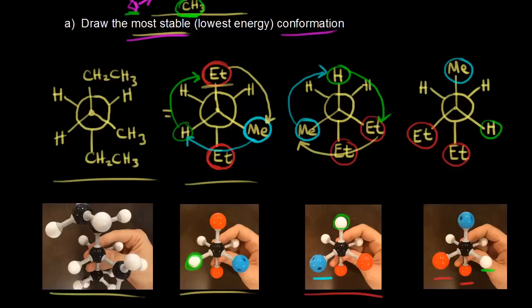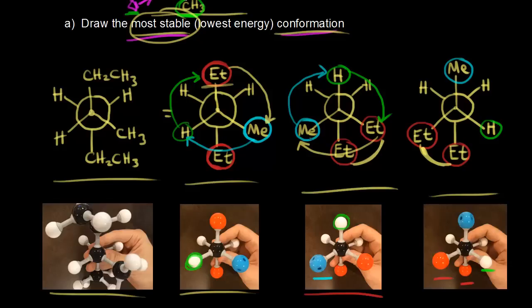Now we're able to choose the most stable conformation out of our three staggered ones. We need to think about the gauche interactions present. The conformation on the right has an ethyl-ethyl gauche interaction — ethyl groups are bulky, so this destabilizes that conformation. The next conformation has an ethyl-ethyl gauche interaction AND a methyl-ethyl gauche interaction — two gauche interactions, making it even more unstable. Finally, the last one has only one gauche interaction between an ethyl group and a methyl group, and since methyl is less bulky than ethyl, this is the lowest energy, most stable conformation.